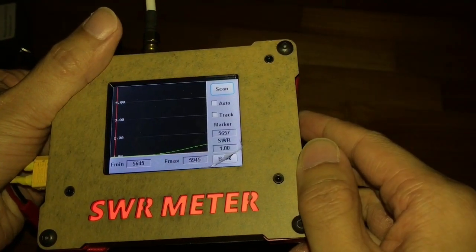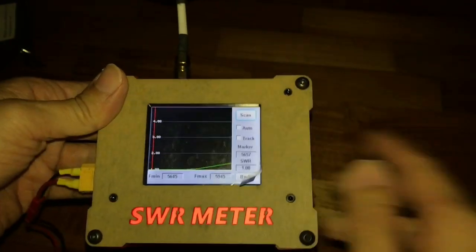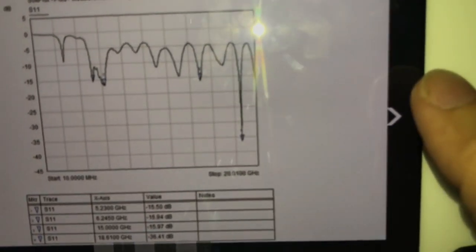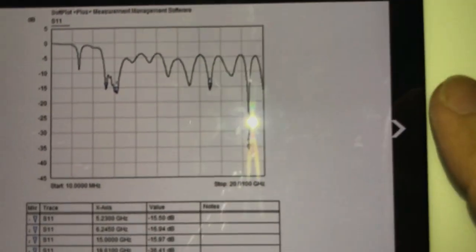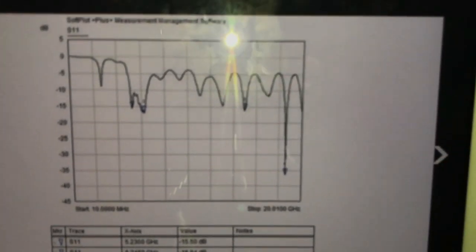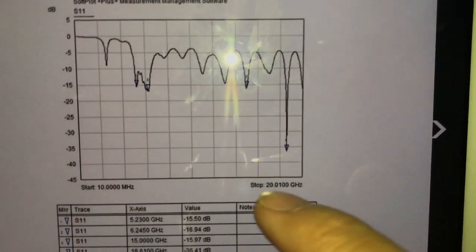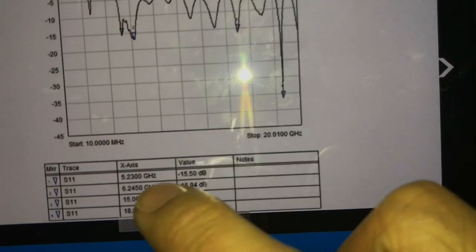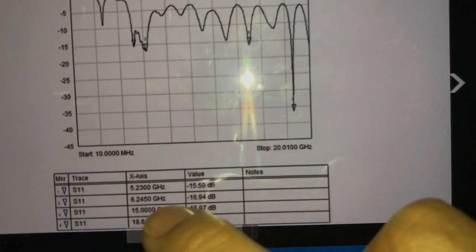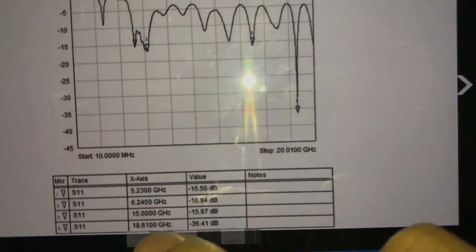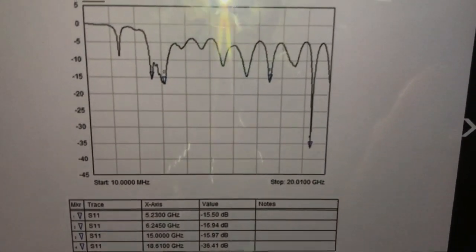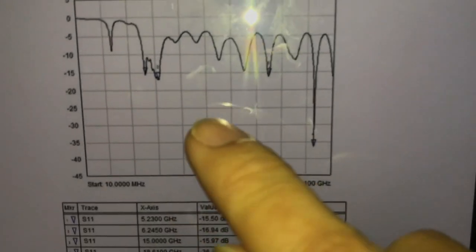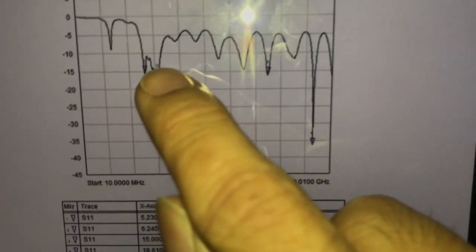This is the measurement of the crosshair antenna. For the crosshair antenna, it has very good reading even though it's handmade. You can see that it has a good VSWR at 5.23. That's the first dip. The second one is 6.24. The third one is 15. And the last one is at 18.6GHz. So the one we are interested in would be the 5.8GHz, which is here. So let me zoom in.